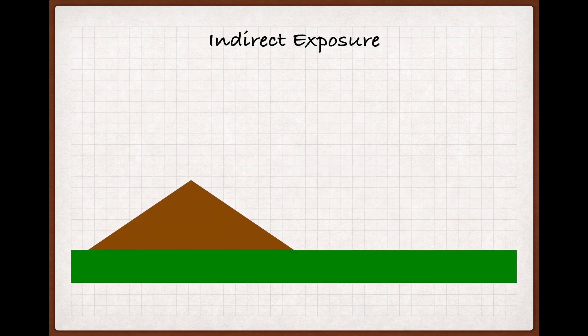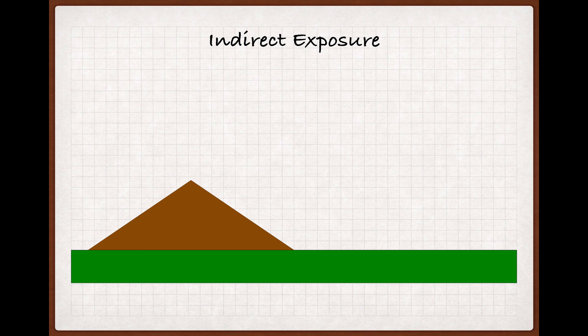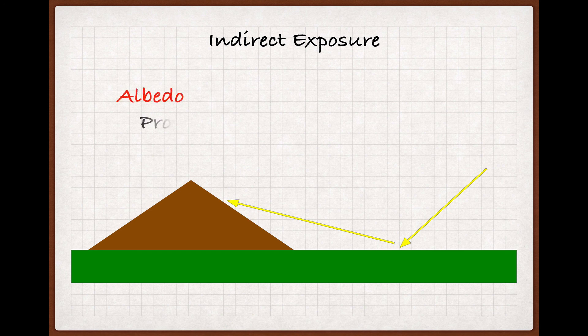Also, in addition to direct sunlight exposure, slopes allow the vines on them to pick up sunlight indirectly, reflected off of the flat ground facing the slope. How much light gets from the ground to the slope will depend on the albedo, or surface reflectance, of the ground facing the slope.